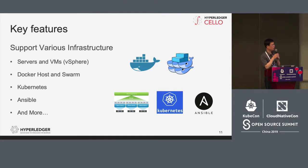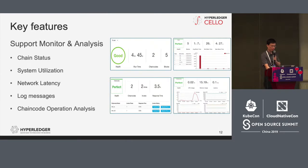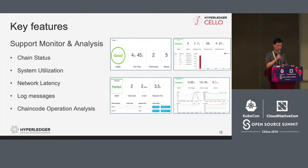The infrastructure includes five major parts: Docker, servers, VMware vSphere, Kubernetes — which has become the dominating container-based scheduling platform — and Ansible, which is an automation tool. More platforms can be added for expansion. We hope to support monitoring and analysis of data including chain status, system utilization, network latency, log messages, and chain code operation analysis. All this information can be displayed.